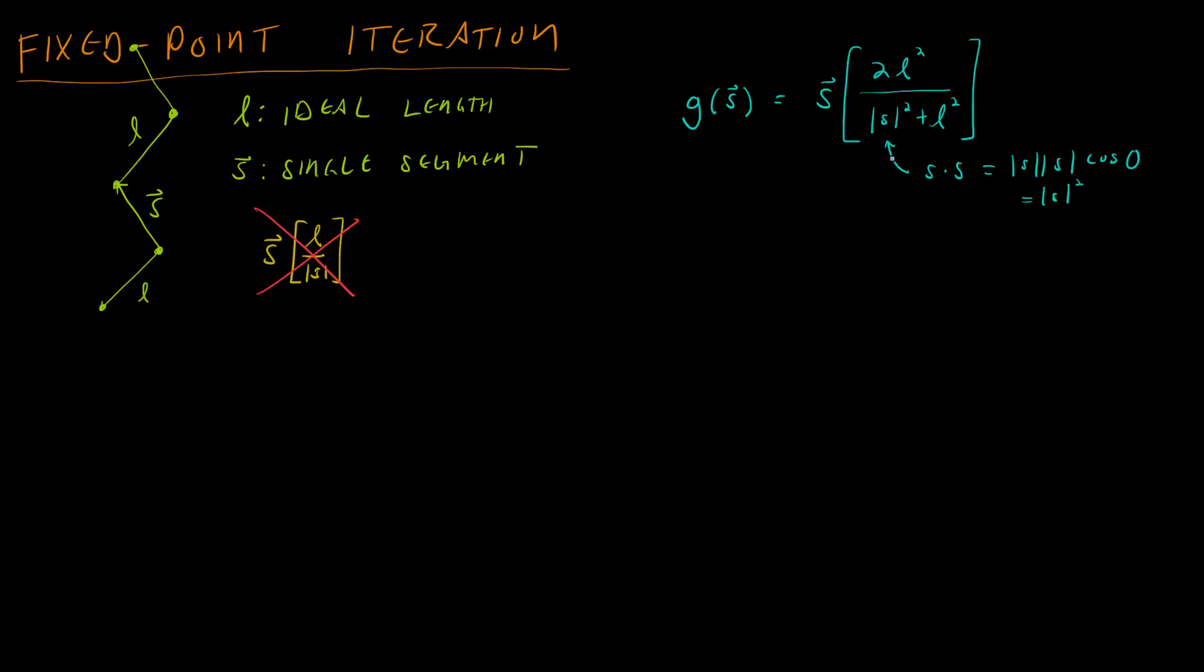So we avoid the square root operation, which makes it a little bit faster, but it's not perfect. It doesn't set the segment to be length L unless the segment is already exactly a length of L.